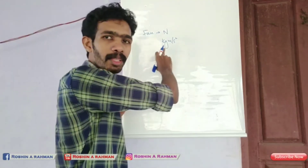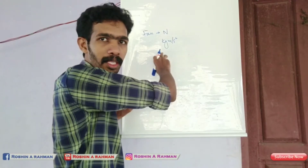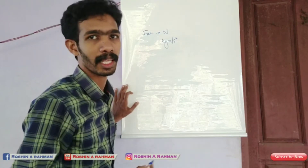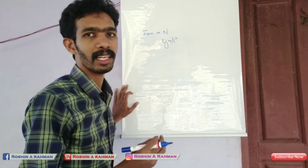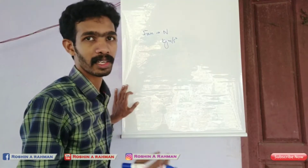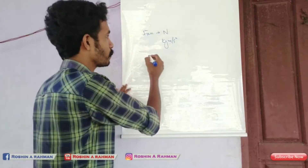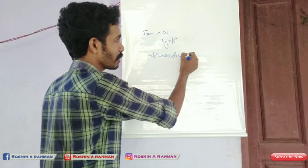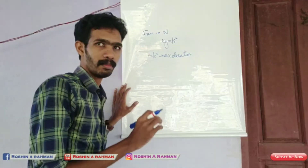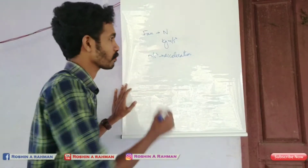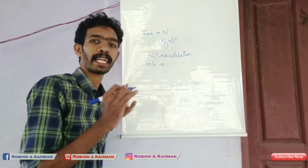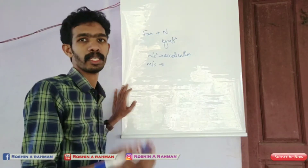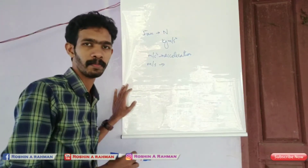The unit of kilogram is mass. Meter per second square is the unit of acceleration. So force equals mass times acceleration, expressed as kilogram meter per second square. Meter per second square is the acceleration unit, and meter per second is the unit of speed and velocity.